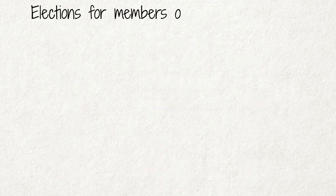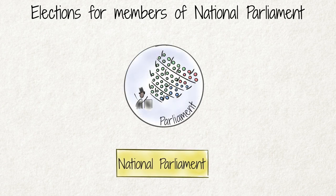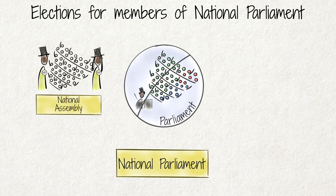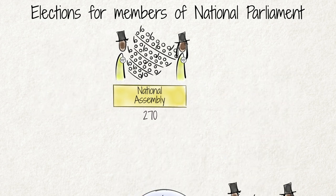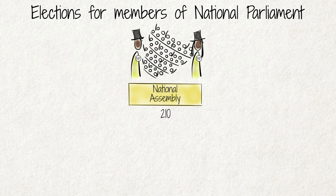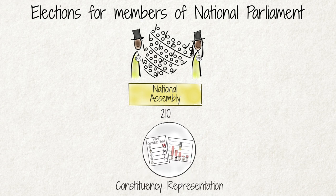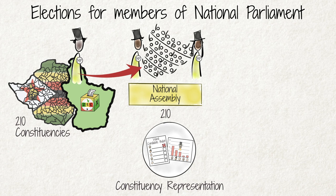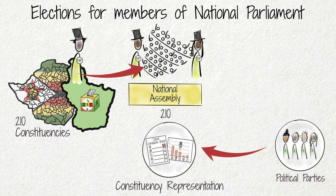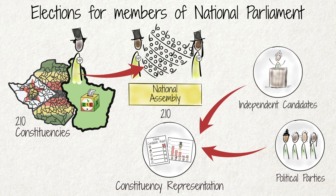Our National Parliament is composed of two houses: the National Assembly (N.A.) and the Senate. The N.A. currently has 270 members, and the Senate has 80 members. Of the 270 members of the National Assembly, 210 are elected according to the constituency representation system. There are 210 constituencies, and whoever wins the most votes in a constituency wins that seat. Candidates may be nominated by political parties, or they may contest in elections as independent candidates.